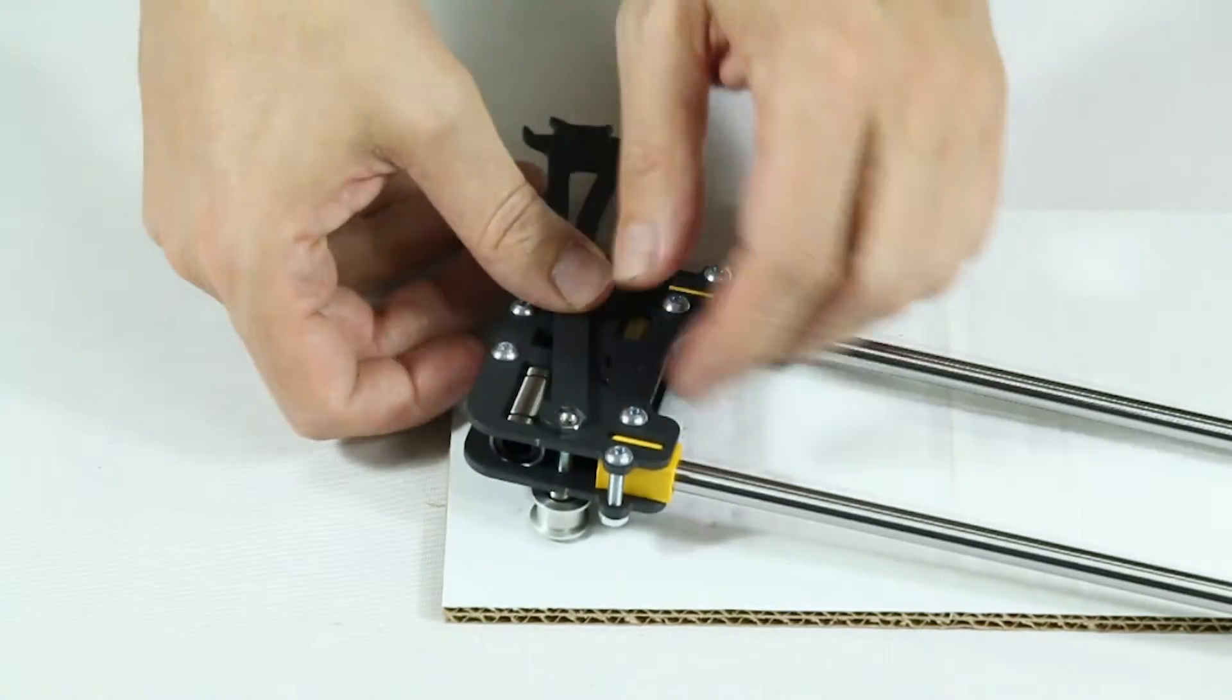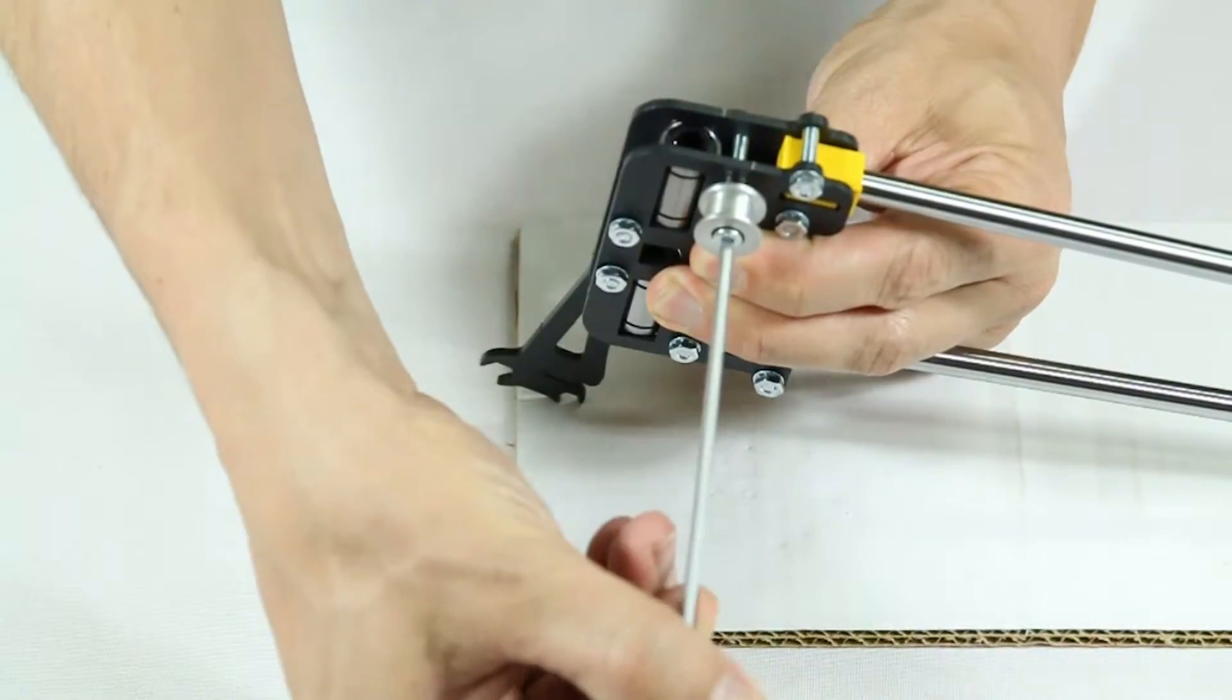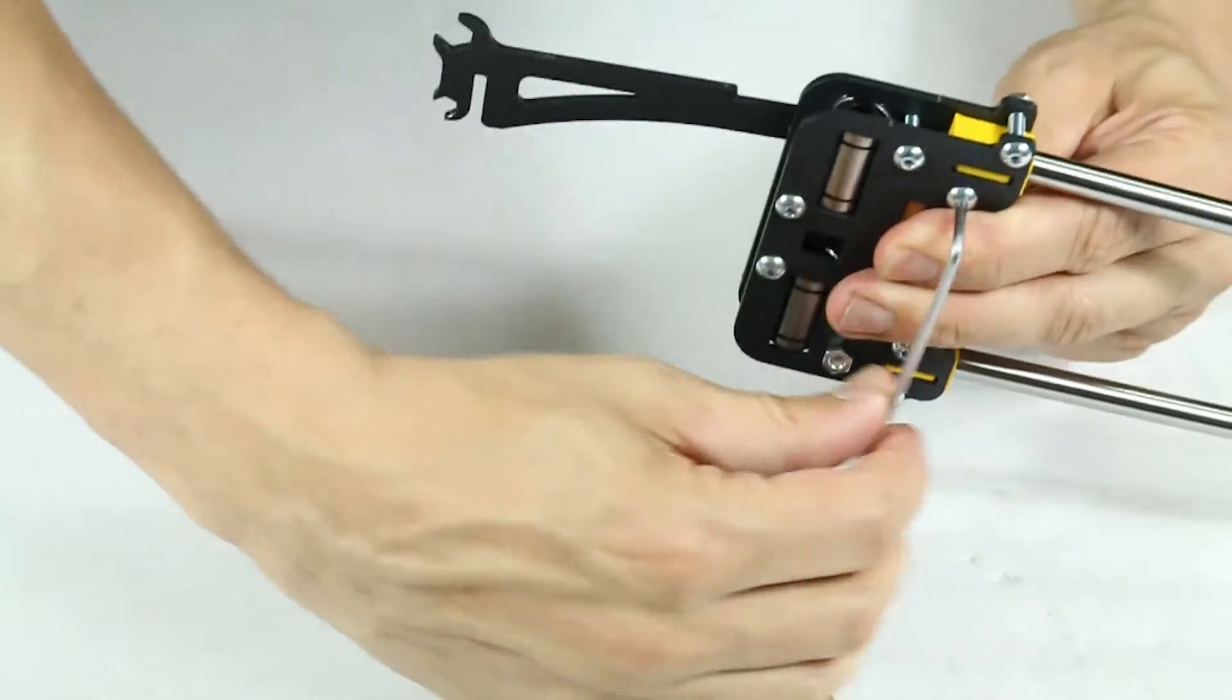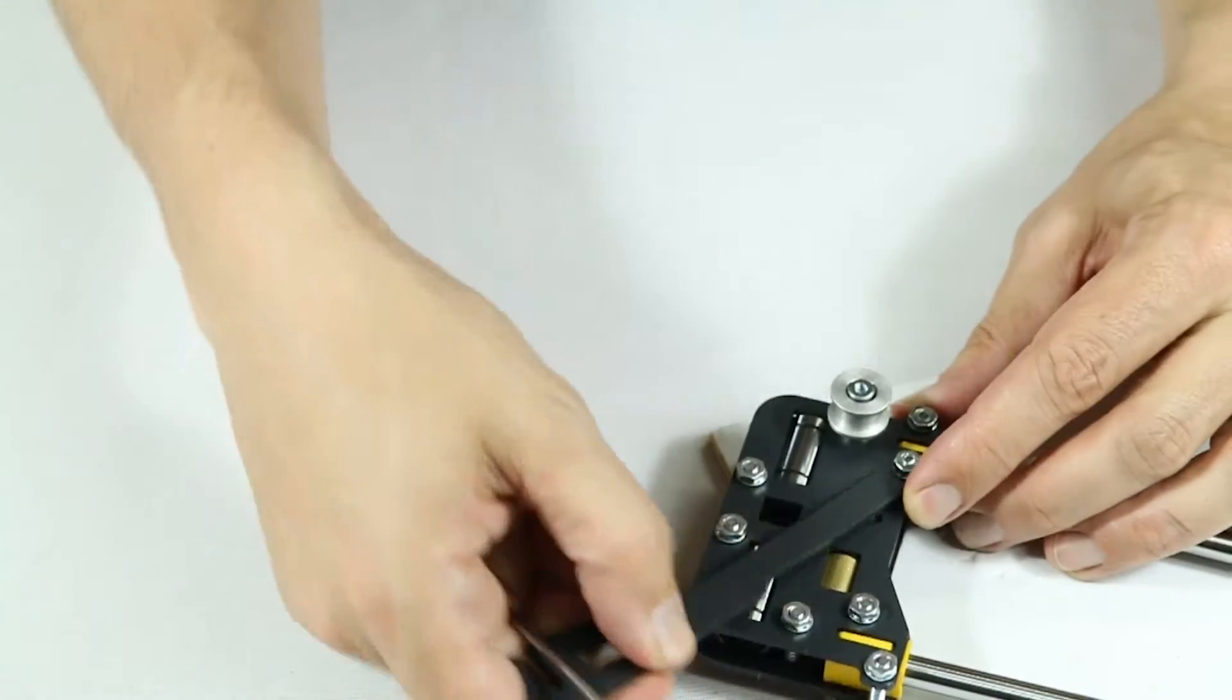Now tighten all the screws and nuts. Tighten each screw and nut bit by bit, and not each screw fully one at a time to tighten the assembled part evenly.